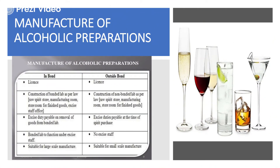Moving on to the differences between in-bond and outside-bond manufacturing — one of the most important topics asked in B.Pharm and D.Pharm exams. In-bond manufacturing is a total government organization which is licensed. The construction of the bonded lab must be as per the law, requiring a raw spirit store, manufacturing room, store room for finished products, and excise office. The complete lab layout — including finished room, warehouse, and manufacturing room — must be designed as per government norms, with all entry and exit points controlled.